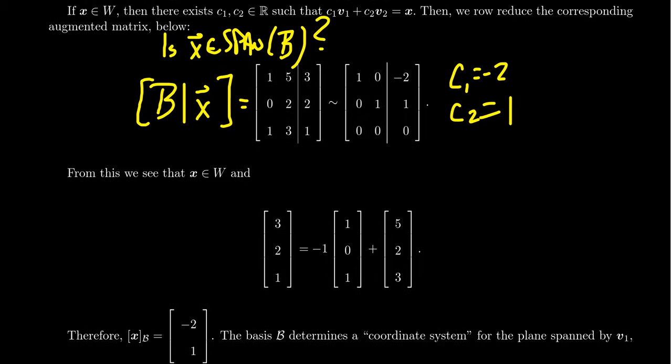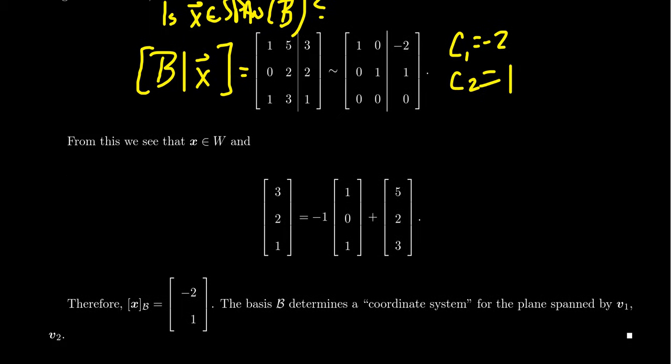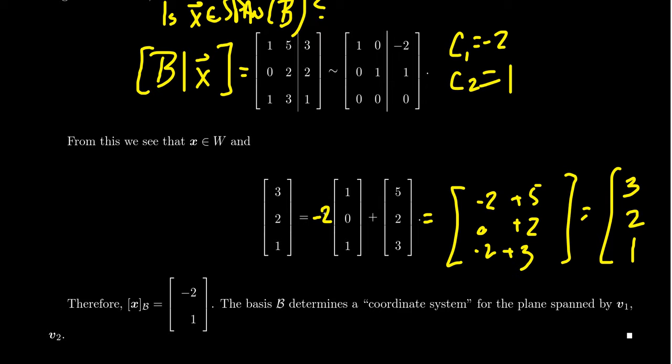We can verify that fact here. Sorry, there's another typo. There's too many typos in this video. Sorry, everyone. But we're going to get, you can check that 3,2,1 is in fact equal to negative 2 times 1,0,1 plus 5,2,3. And let's just double check that to make sure. If you take the first one, you're going to get negative 2, 0, negative 2. You're going to add to that 5, 2, and 3. And then just double checking, right? 5 take away 2 is a 3. 0 plus 2 is a 2. And 3 take away 2 is a 1. So that is, in fact, correct.